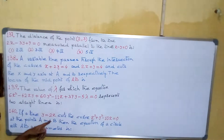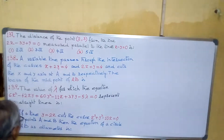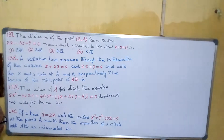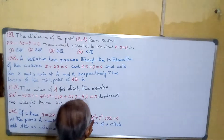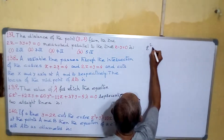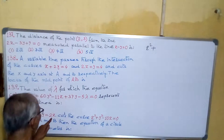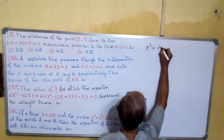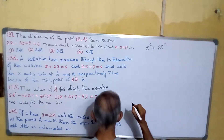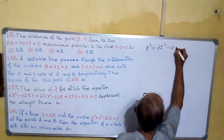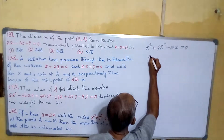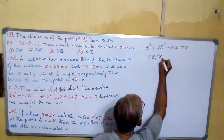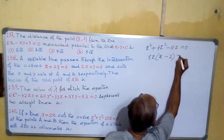If a line y equals to 2x cuts the curve at the points A and B, then the equation of the circle with AB as diameter. So if we put y equals to 2x into the curve equation, x² plus y² becomes x² + 4x² minus 10x equals to 0. That is 5x² minus 10x, so taking 5x common, x minus 2 equals to 0.